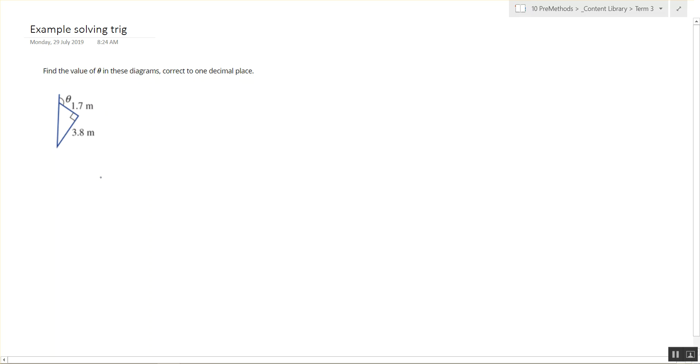So, the question's asking to find this unknown angle out here, theta. We know this side here is 1.7 metres, and we know this side is 3.8 metres.